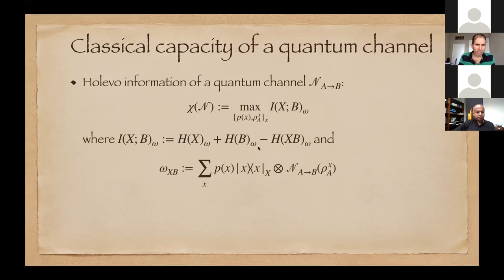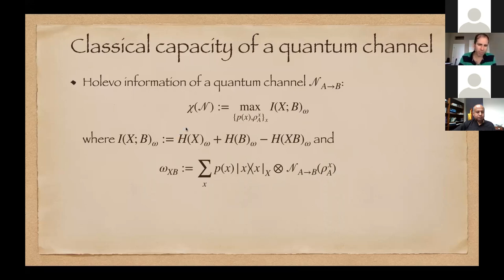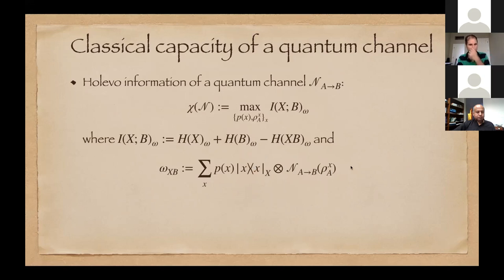The Holevo information is a linear combination of von Neumann entropies. You imagine some ensemble of quantum states: with probability p(X), a state rho_X is chosen; you send rho_X into the channel and get a joint density operator of classical system X and quantum system B. With respect to this state you compute these entropies. The von Neumann entropy for density operator rho is negative trace of rho log rho. H(B) is the entropy after tracing over X; you compute these and take the difference to get the Holevo information — an achievable rate for classical communication over a quantum channel.